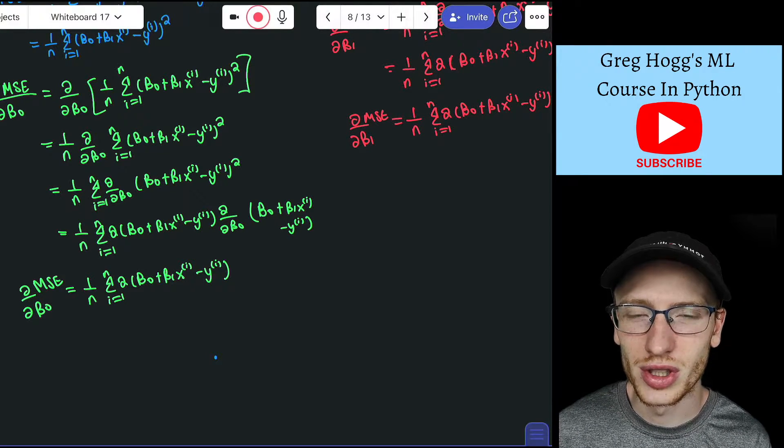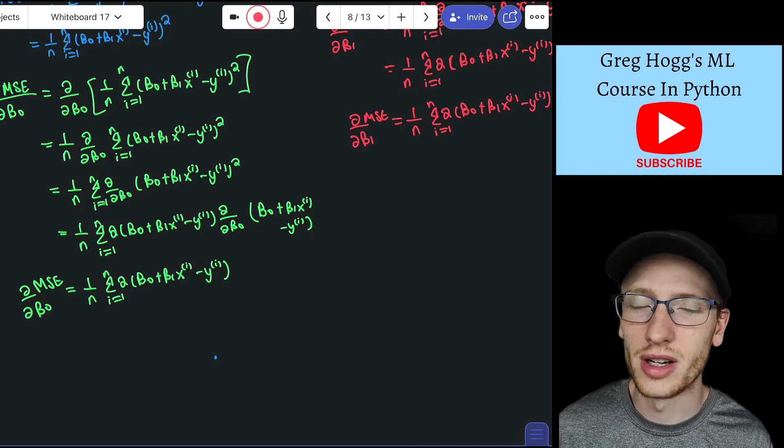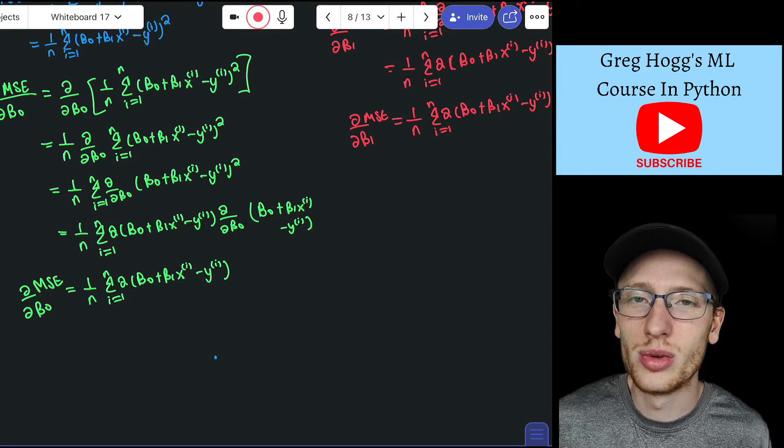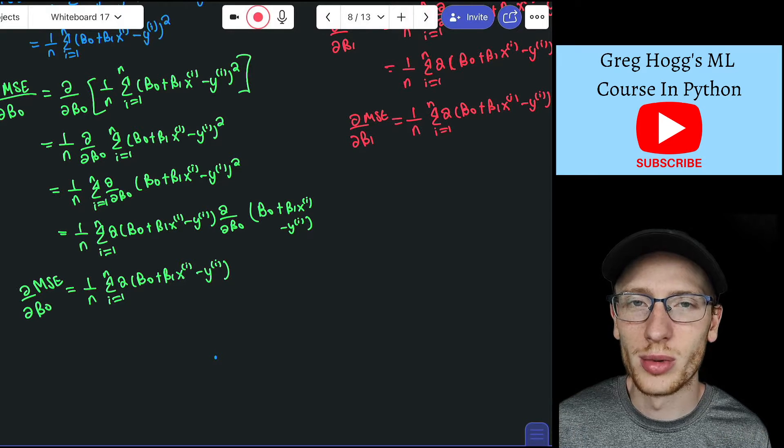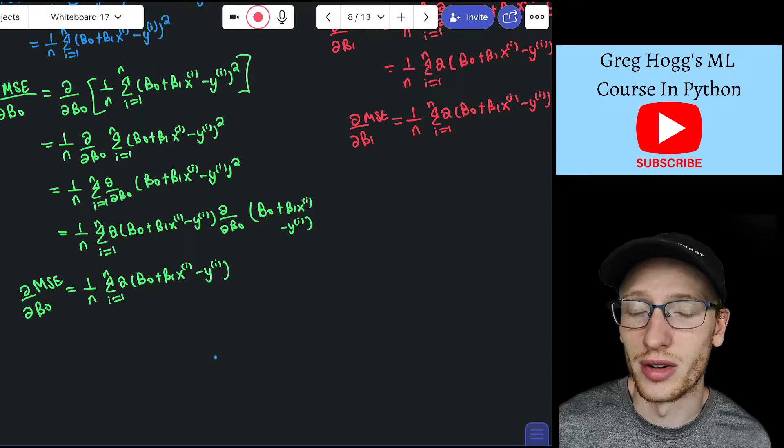That just means that you can get a solution for a closed form, which means you can get some formula for beta0 and beta1 where you can do that formula and get the right beta0 and beta1 to minimize the MSE or to get that line that you want.